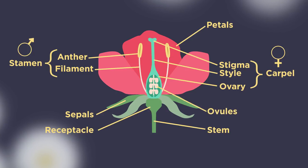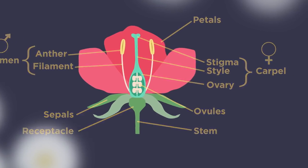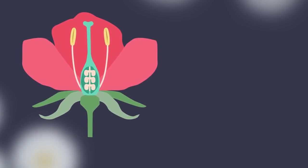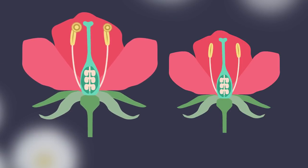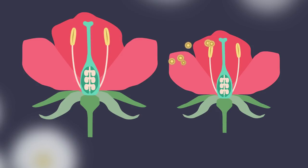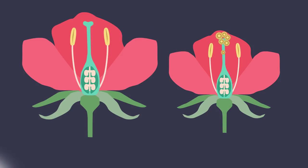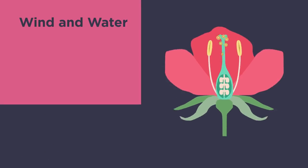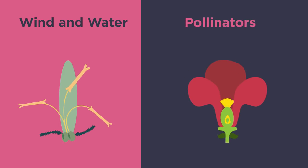So how does pollination work? Pollination is the transfer of pollen from the male anther of one flower to the female stigma of another. Flowers can be pollinated in different ways: by wind and water, or by pollinators such as insects, birds and other animals.